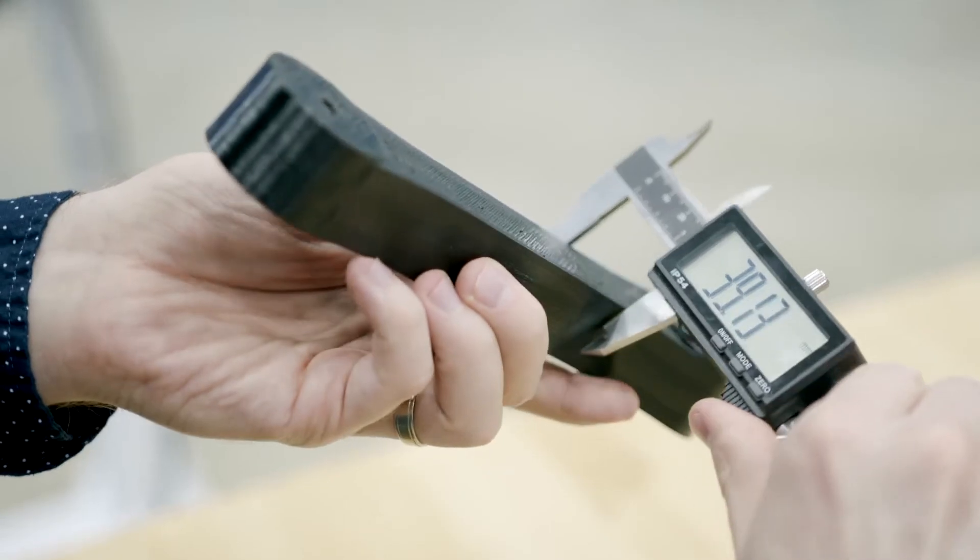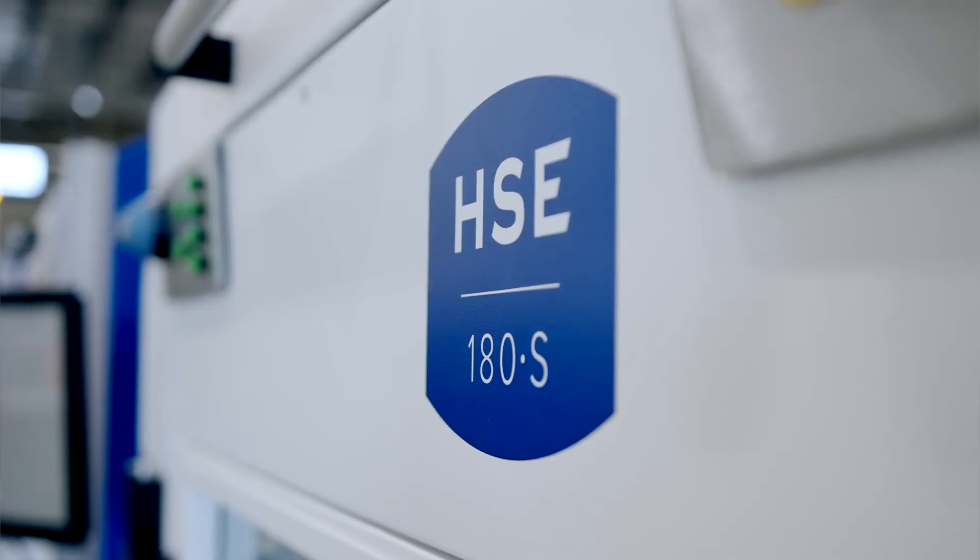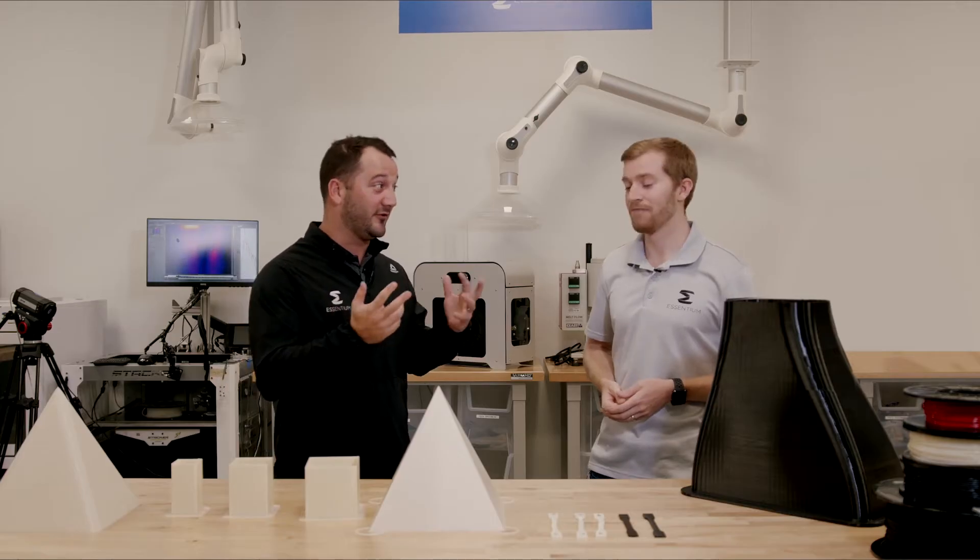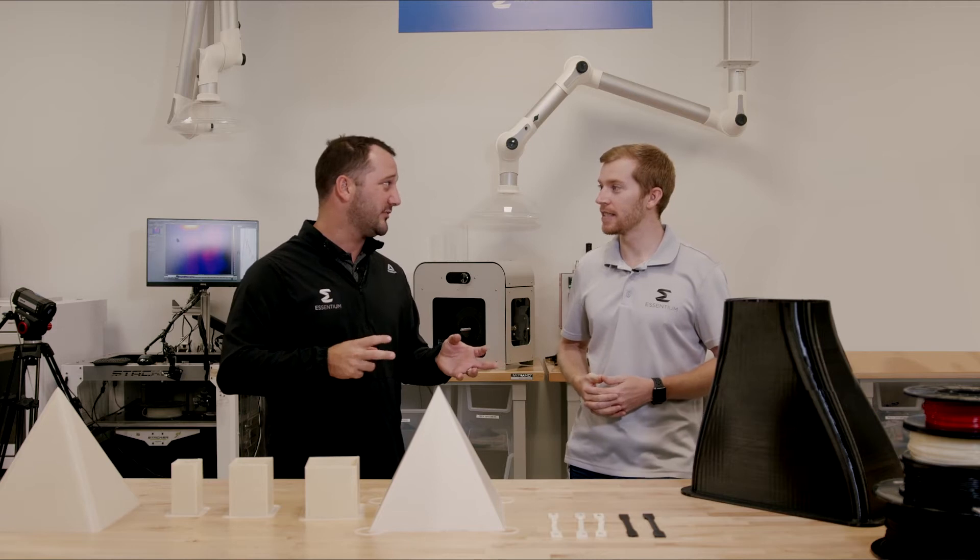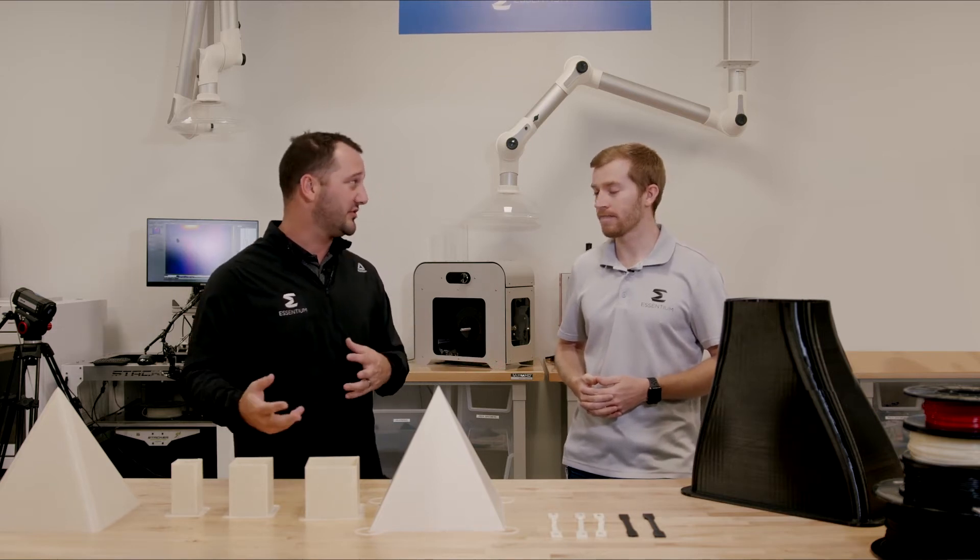So when a customer gets a material from Ascentium, they have the stamp of HSE certified. That comes directly from you and your team. They get the stamp. They get the official stamp, the rubber stamp. What does that mean for the customer in terms of the operation of the printer with those materials?